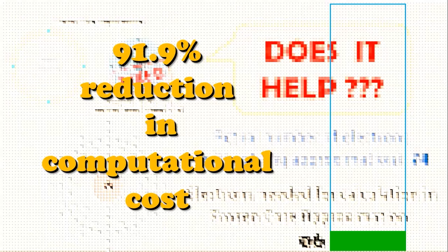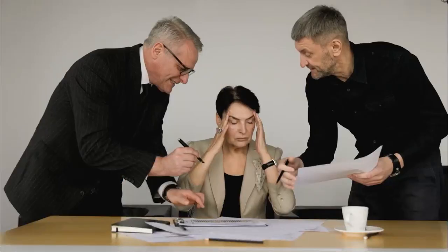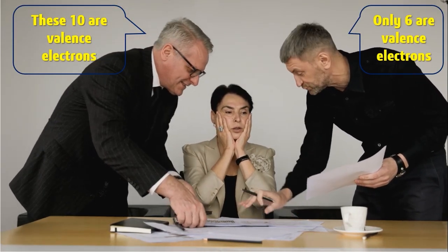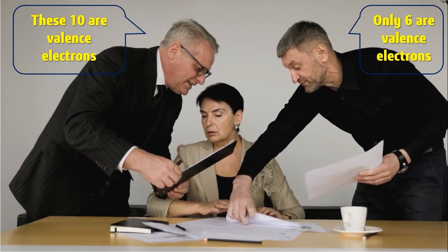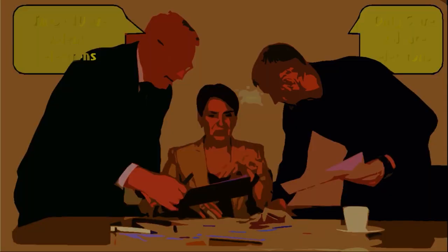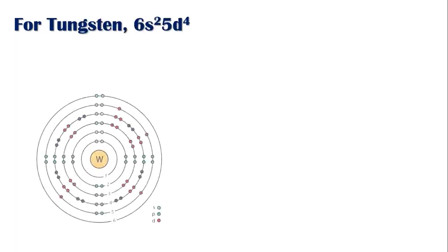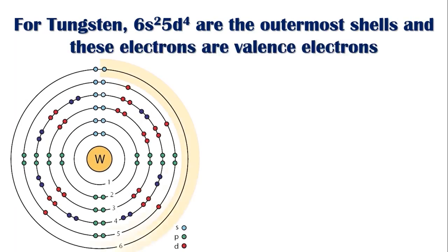That was good, but the next question then becomes how do we decide which wave functions should be considered core and which ones as valence states? As a rule of thumb, in the context of DFT calculations, the term valence corresponds to the outermost shell of the atom in the periodic table. For example, for tungsten we would have 6s2 5d4.